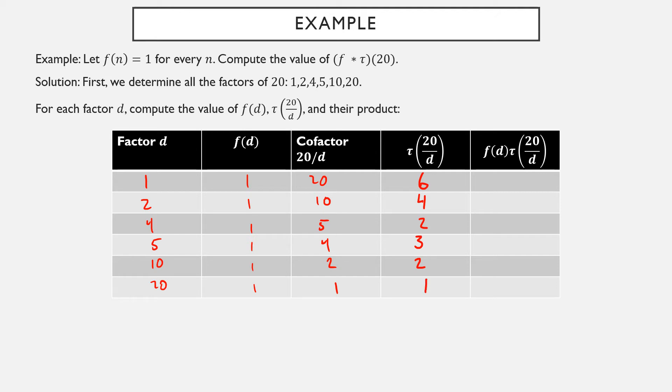Next, we take the product f(d) times tau(20/d). Of course, f(d) is always 1, so this is just exactly the same as the previous column. Well, with that in hand, we just have to sum them up. 6 plus 4 plus 2 plus 3 plus 2 plus 1 is 18. So, lo and behold, f star tau of 20 is 18.